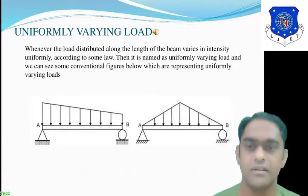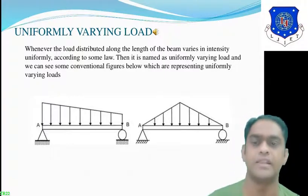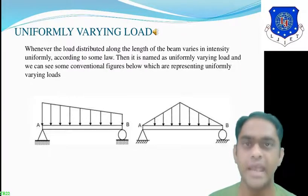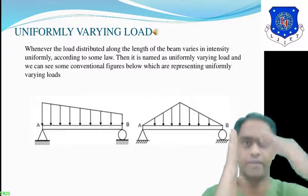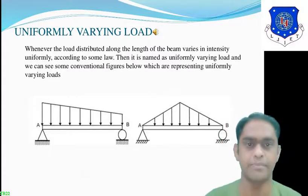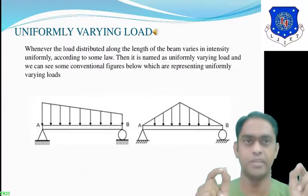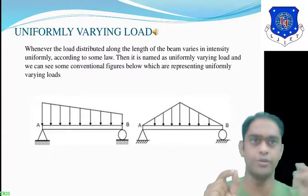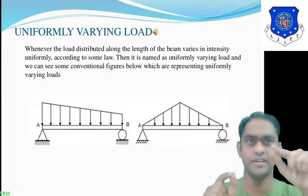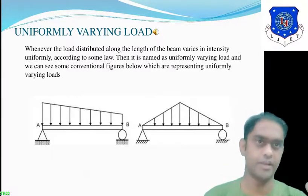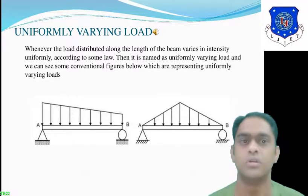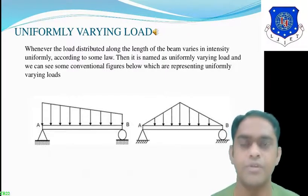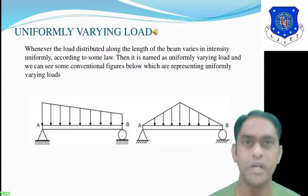The third load is uniformly varying load (UVL). In the first figure, support A is on the left and support B is on the right. The load is highest at point A and continuously decreases up to point B. In the second figure, the load is zero at both ends; moving from A to B, the load continuously increases to a maximum at the midpoint and then decreases back to zero at point B. These figures indicate uniformly varying load.